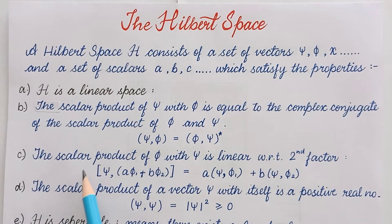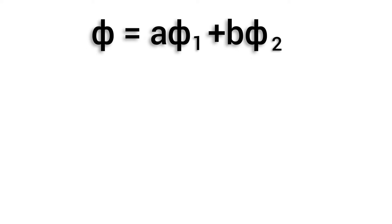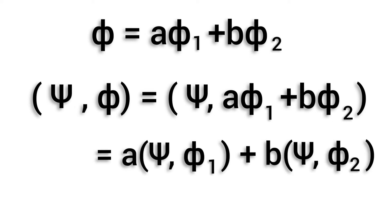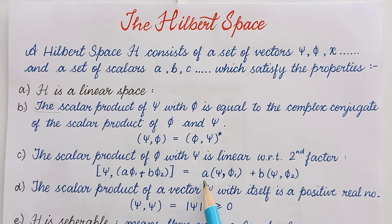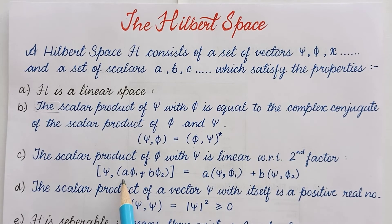Moving further, the scalar product of psi with phi is linear with respect to the second factor. To understand this, let phi equal a phi-1 plus b phi-2. Then the scalar product psi comma phi gives psi comma a phi-1 plus b phi-2, which equals a times psi phi-1 plus b times psi phi-2. So the scalar product is linear with respect to the second factor.